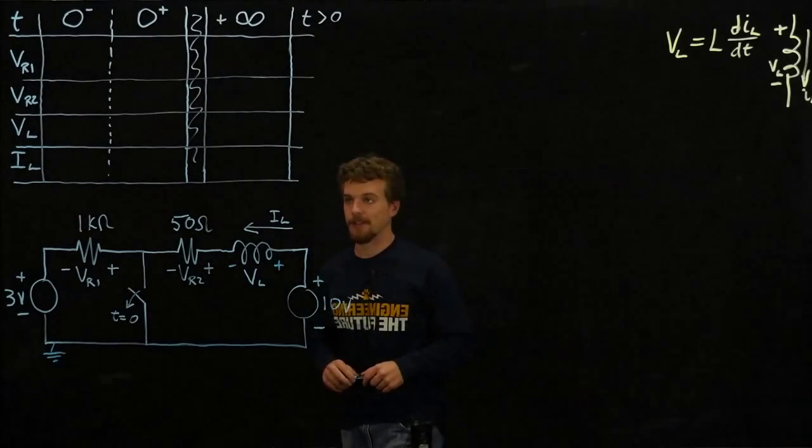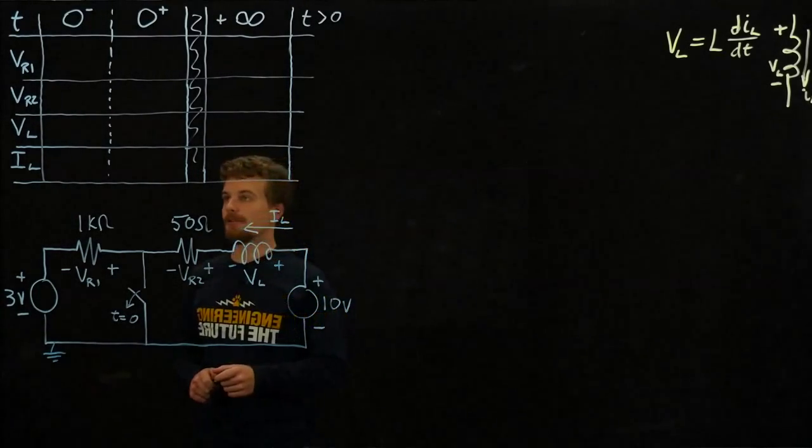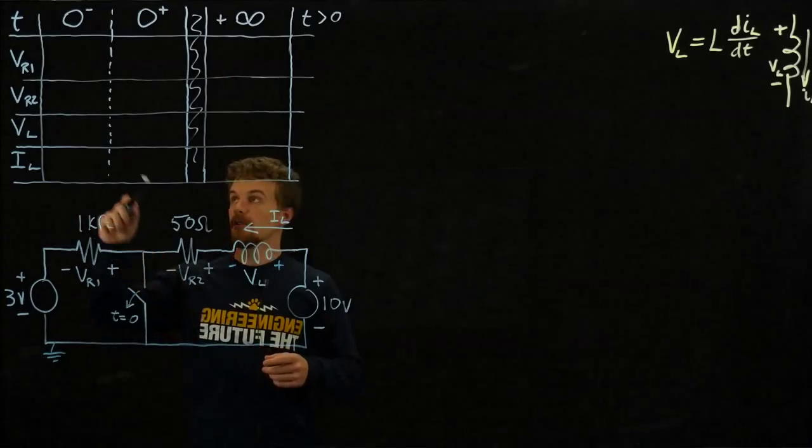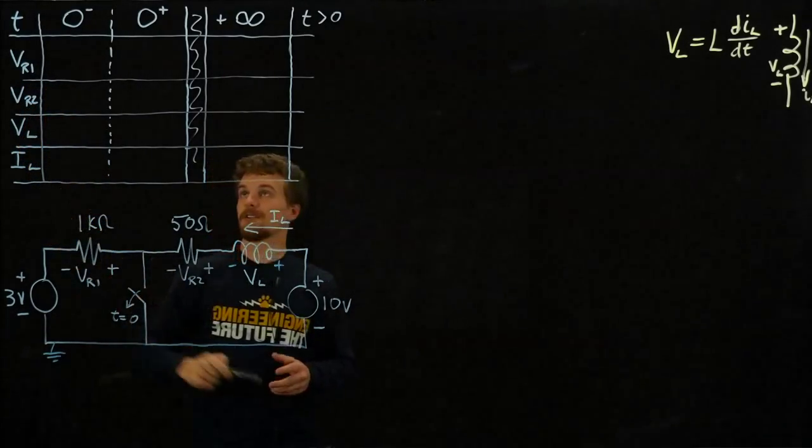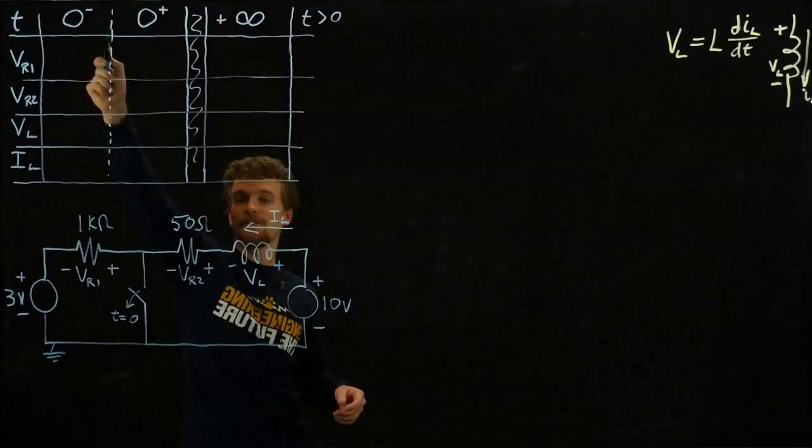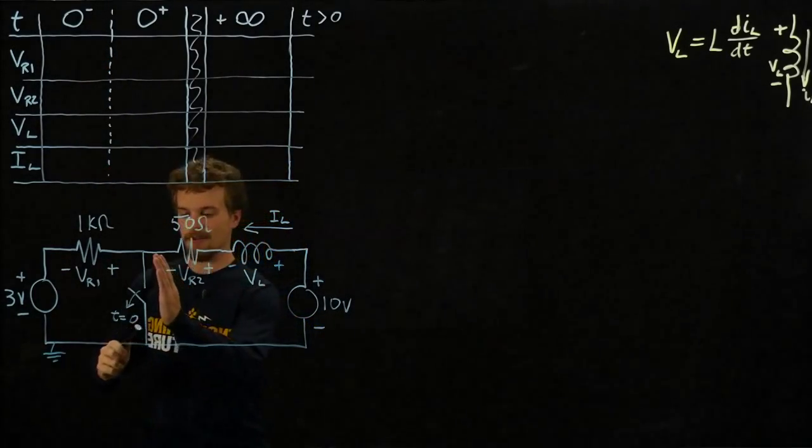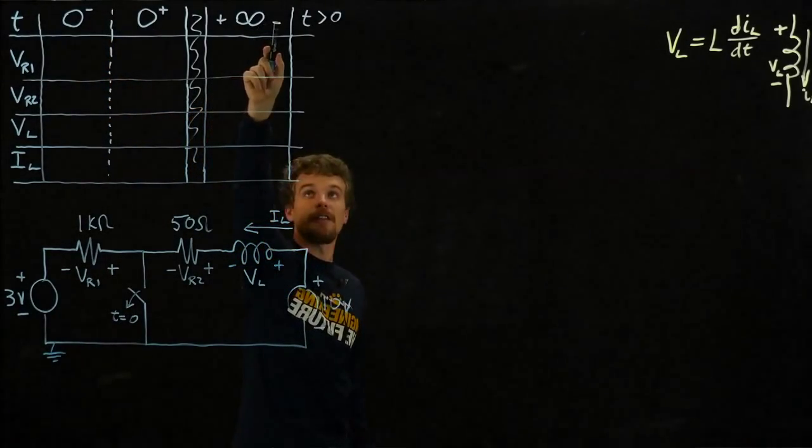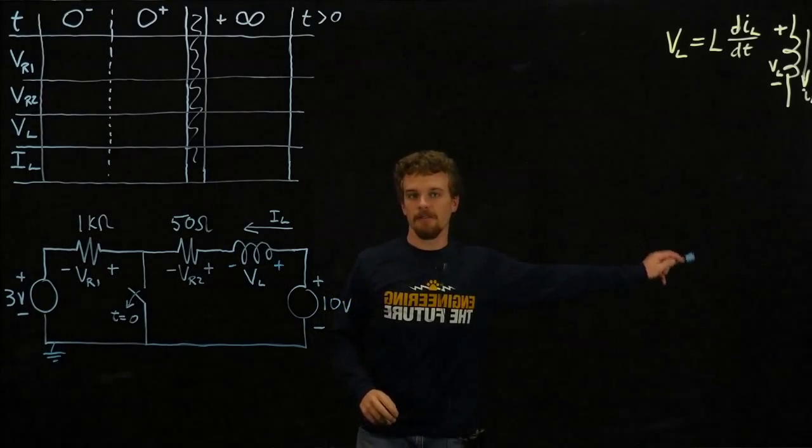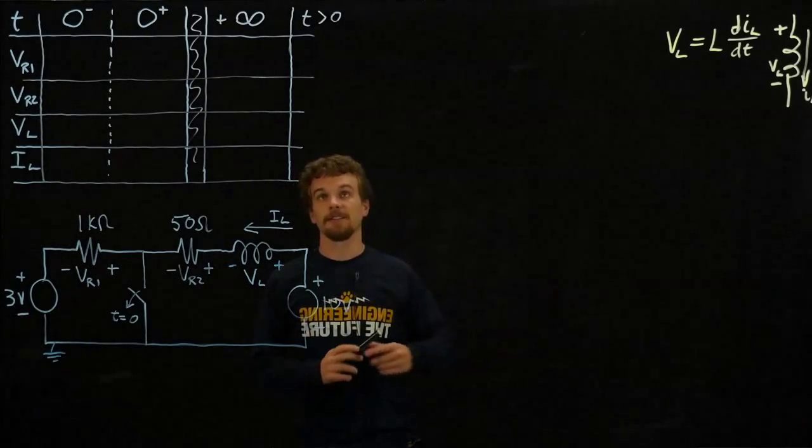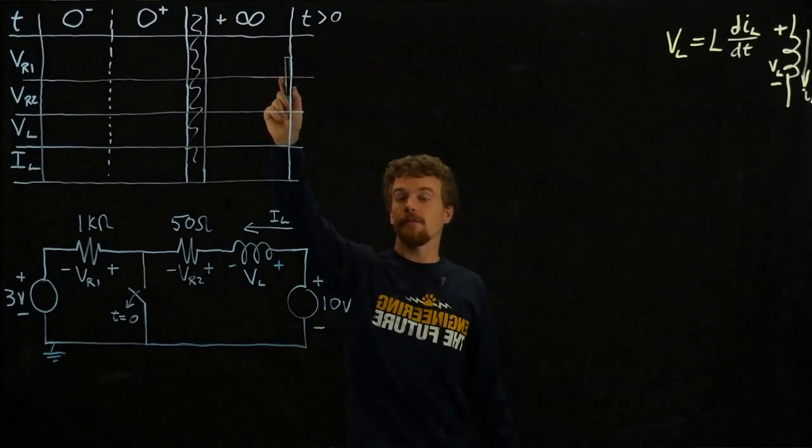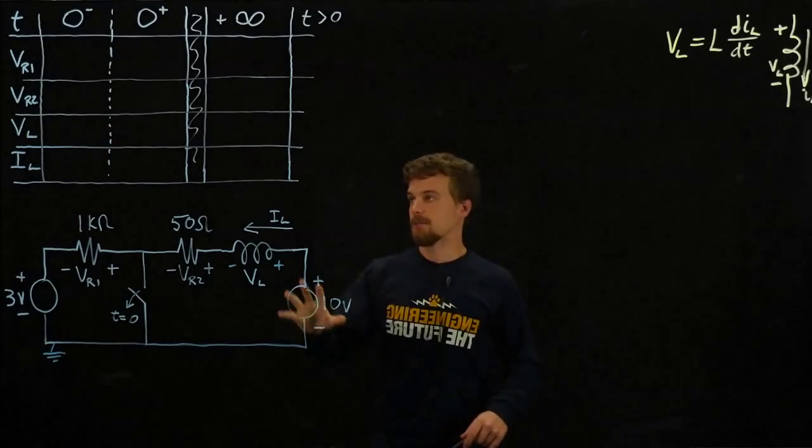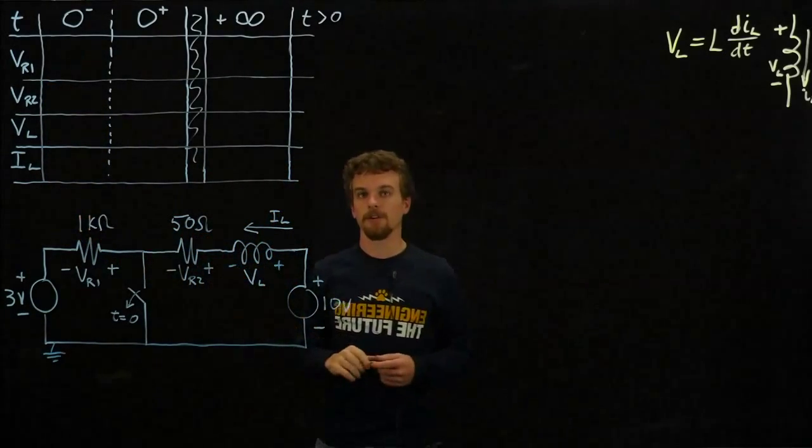We set up a table here, and we would like to find values for these parameters at right before the switch opens. The switch opens at t equals zero, right before it opens, right after it opens, and then at positive infinity after everything settles down. Eventually we will also use differential equations to solve for time expressions that describe these values over t greater than zero.